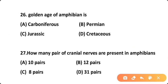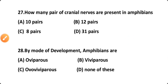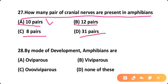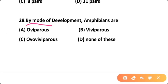The golden age of amphibians is — Option A: Carboniferous period, Option B: Permian period, Option C: Jurassic period, Option D: Cretaceous period. Correct answer is Option A — the golden age of amphibians is the Carboniferous period. Question twenty-seven: How many pairs of cranial nerves are present in amphibians? Option A: 10 pairs, Option B: 12 pairs, Option C: 8 pairs, Option D: 31 pairs. Correct answer is Option A — 10 pairs of cranial nerves are present in amphibians.